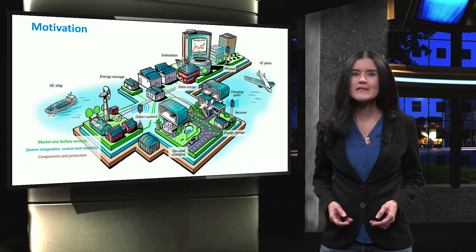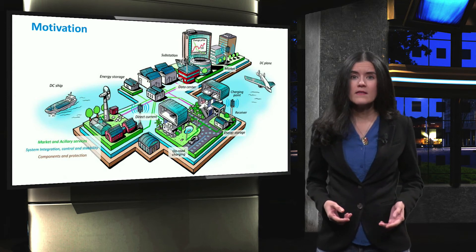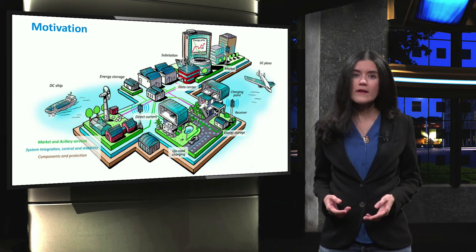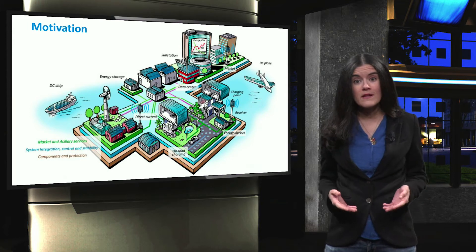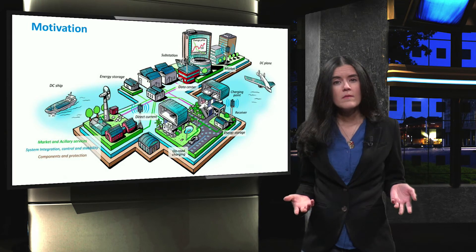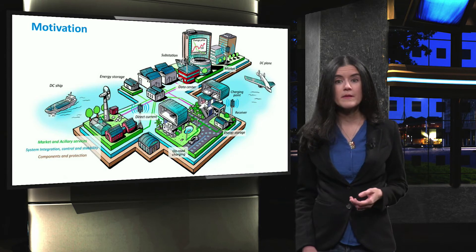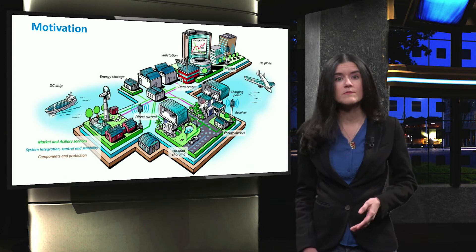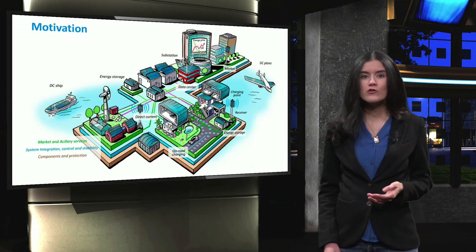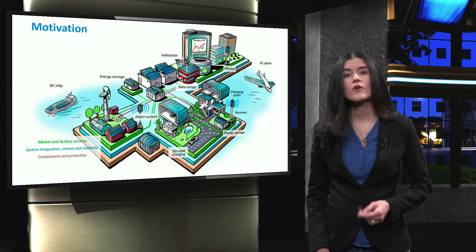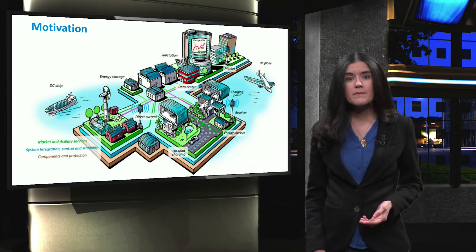When renewable energy sources and storage systems are integrated in an uncoordinated way, these new components may create technical, economical and operational problems. The intermittent and uncontrollable nature of renewable energy sources poses a challenge for the successful operation of power systems, especially because keeping the balance between generation and consumption becomes a difficult task. The concept of the smart grid originated from the need to cope with this challenge, as there is a growing need to make existing power systems smarter.